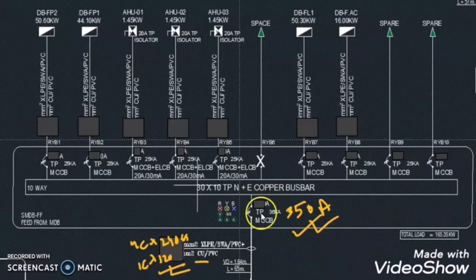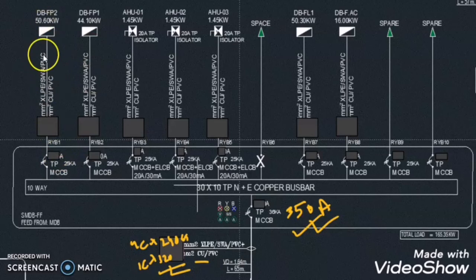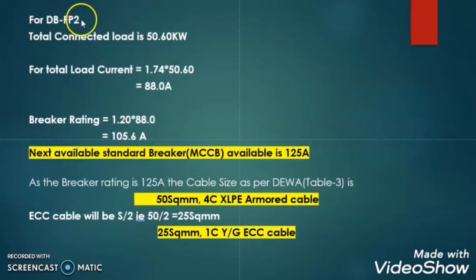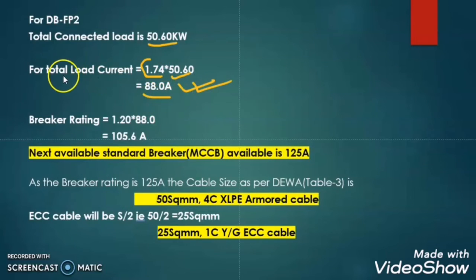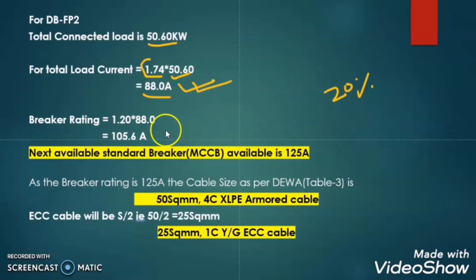So far we have calculated the main incoming breaker and the main incoming cable of this SMDB. Now let us calculate the outgoing breaker and cable required for this load. The load for DBFP2 is 50.60 kW. So the total load current is 1.74 × 50.60 = 88 Ampere. Now in order to calculate the breaker rating we have to multiply with the safety margin. I consider here 20% as the safety margin, so multiplying by 1.20 gives 105.6 Ampere.